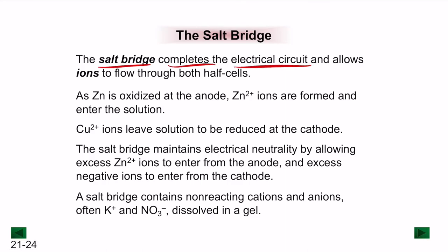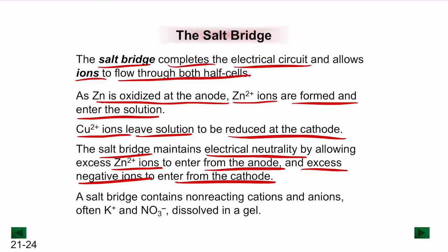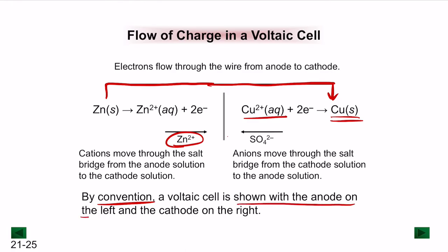The salt bridge completes the electrical circuit and allows ions to flow between the half-cells, maintaining electrical neutrality. As Zn²⁺ ions accumulate at the anode, excess negative ions from the salt bridge enter to balance the charge. As Cu²⁺ ions are consumed at the cathode, cations from the salt bridge enter to maintain neutrality. The salt bridge typically contains non-reacting ions, often potassium and nitrate, dissolved in a gel. By convention, the voltaic cell is shown with the anode on the left and cathode on the right.